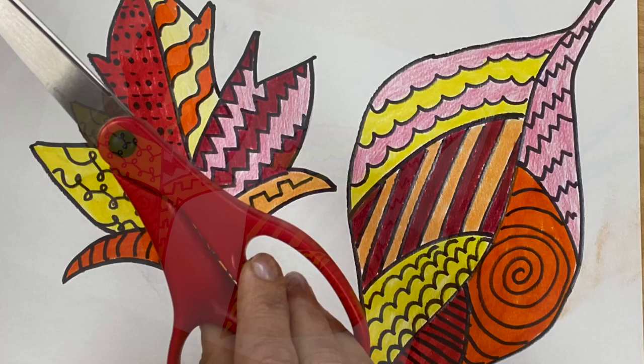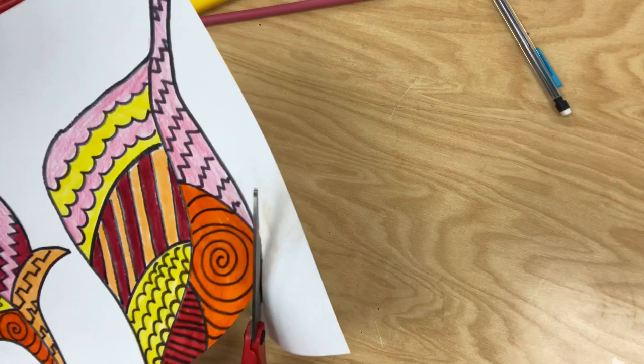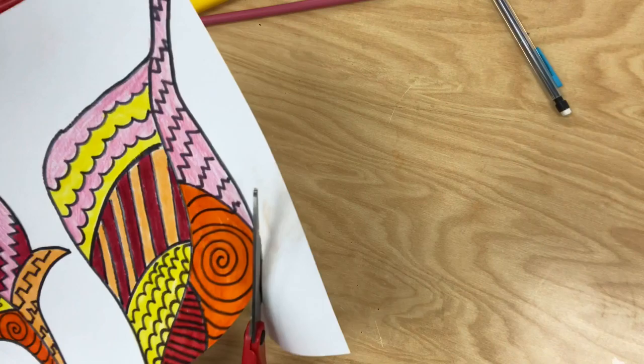Once you've colored the insides of both your leaves using warm colors, now you'll need a pair of scissors and you are going to cut out your leaves. When you are cutting, make sure you cut just a little bit inside that black line.